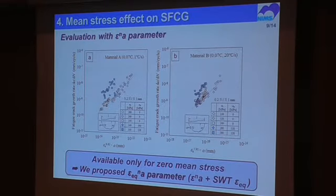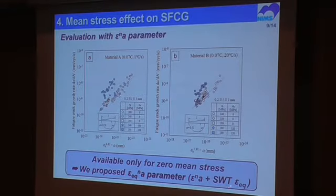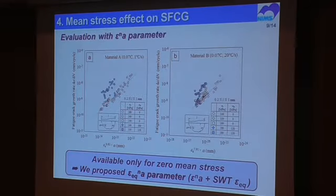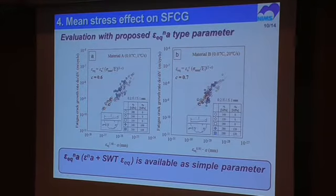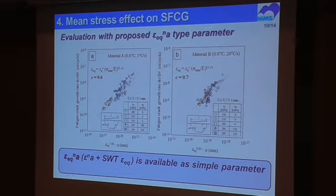To correct the tensile mean stress effect, we proposed an epsilon equivalent 2Na parameter. This is a combination of the epsilon 2Na parameter and the Smith-Watson-Topper parameter as described before. This parameter may also be related to small fatigue crack growth rate. This slide shows the evaluated result using the epsilon equivalent 2Na parameter. As you can see, all fatigue data is uniformly evaluated by this type of parameter. It is verified that this parameter is available to correlate small fatigue crack growth rate as a simple parameter.